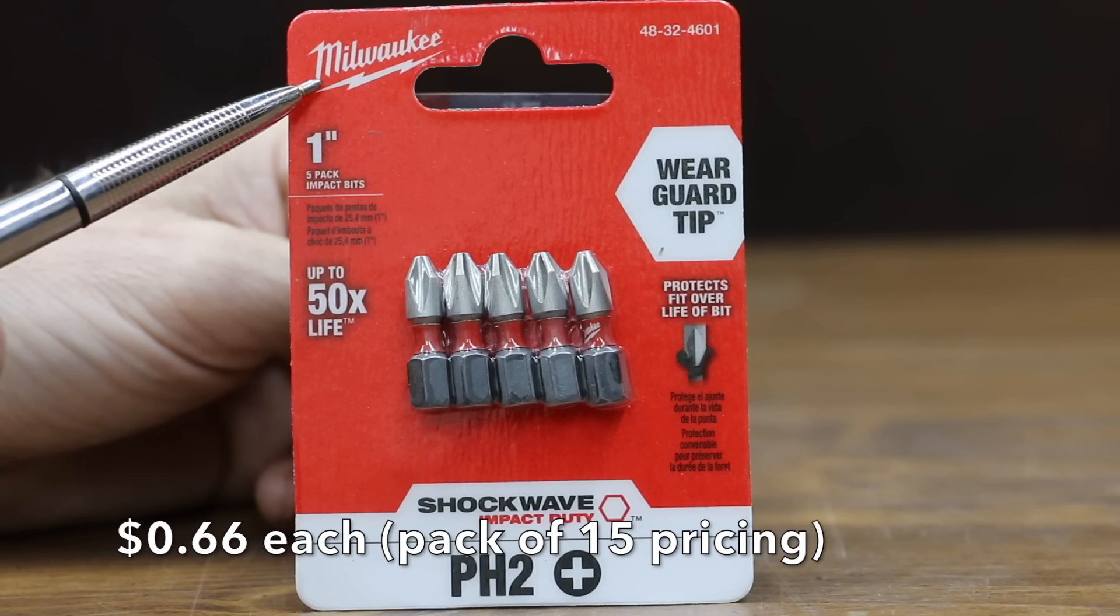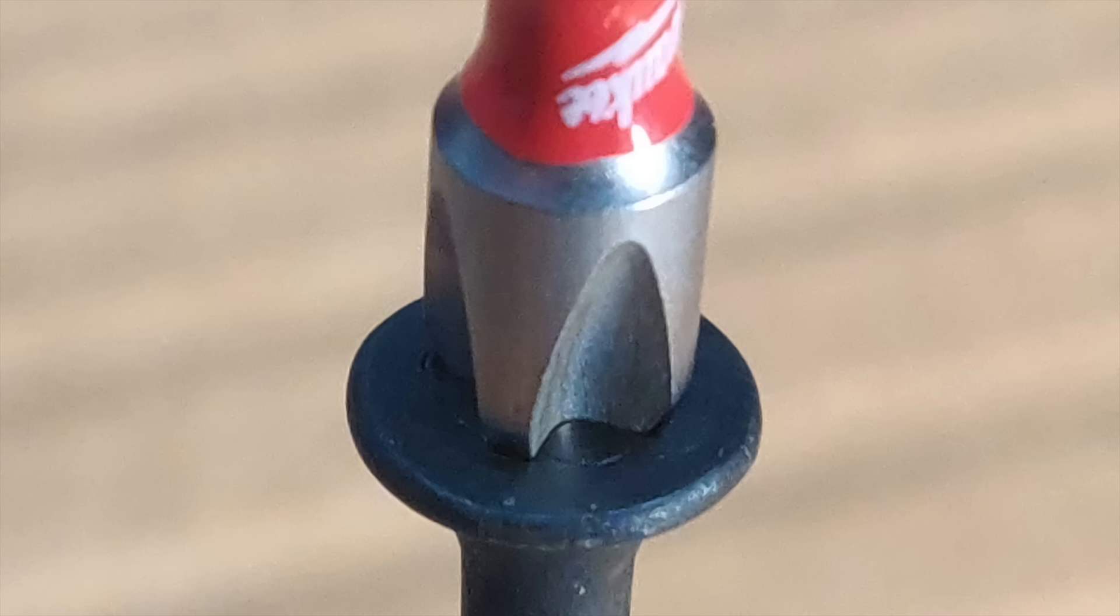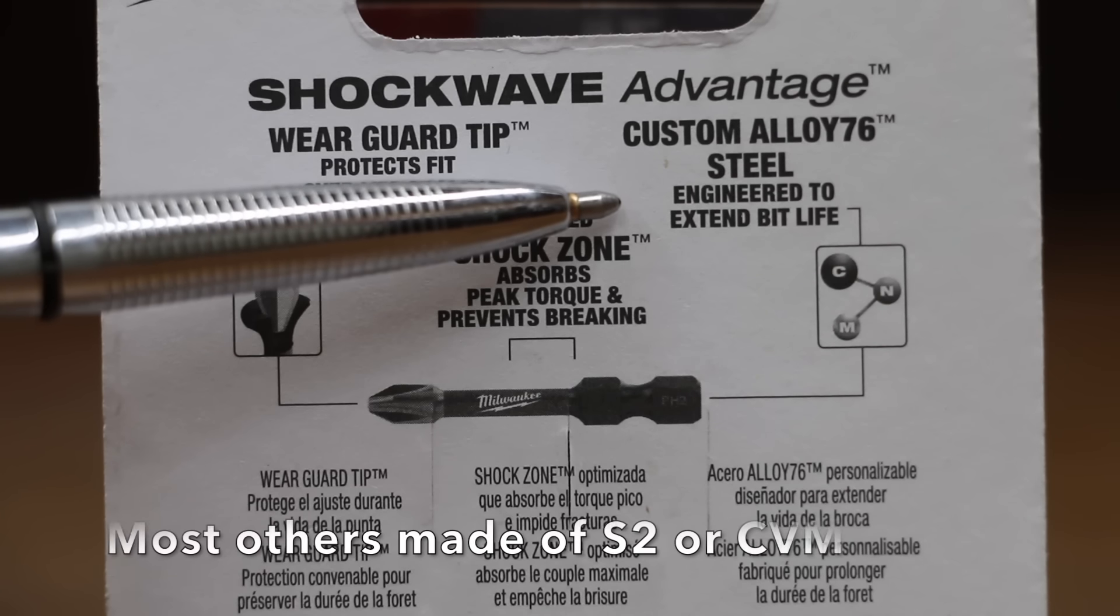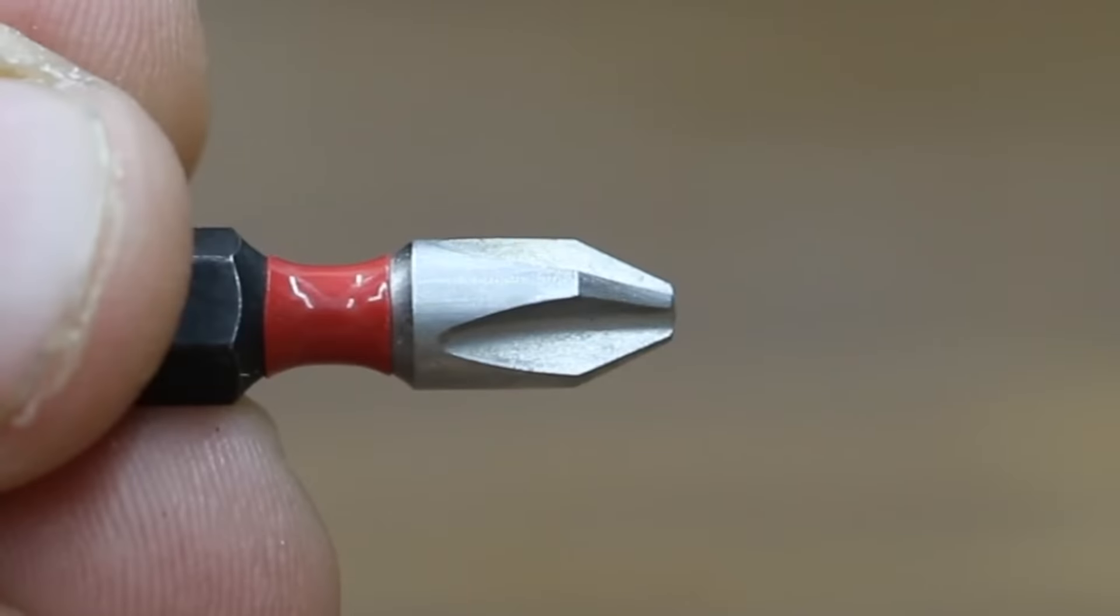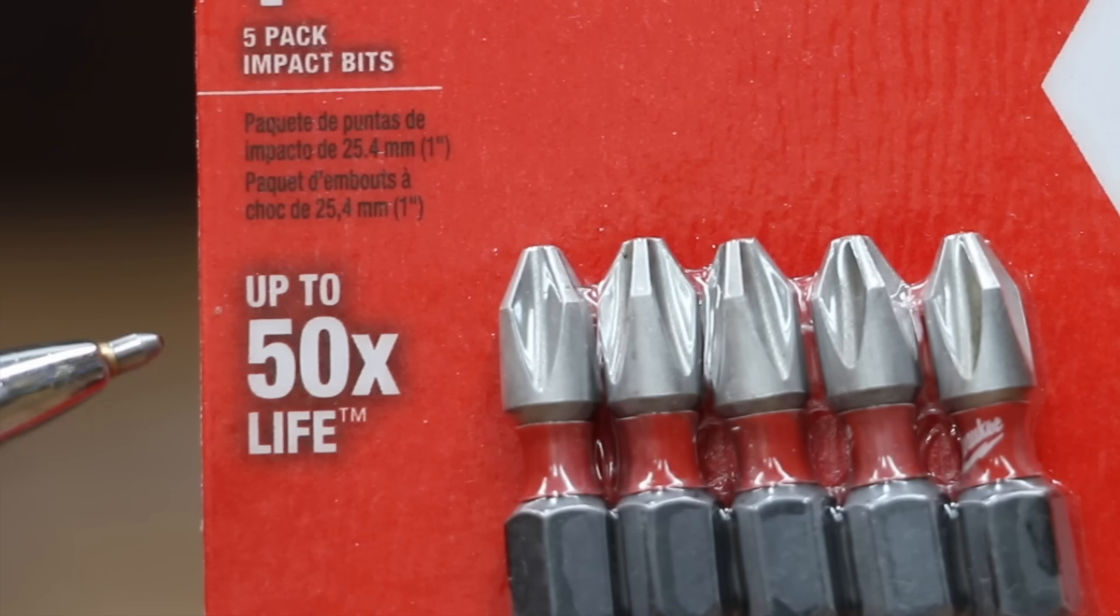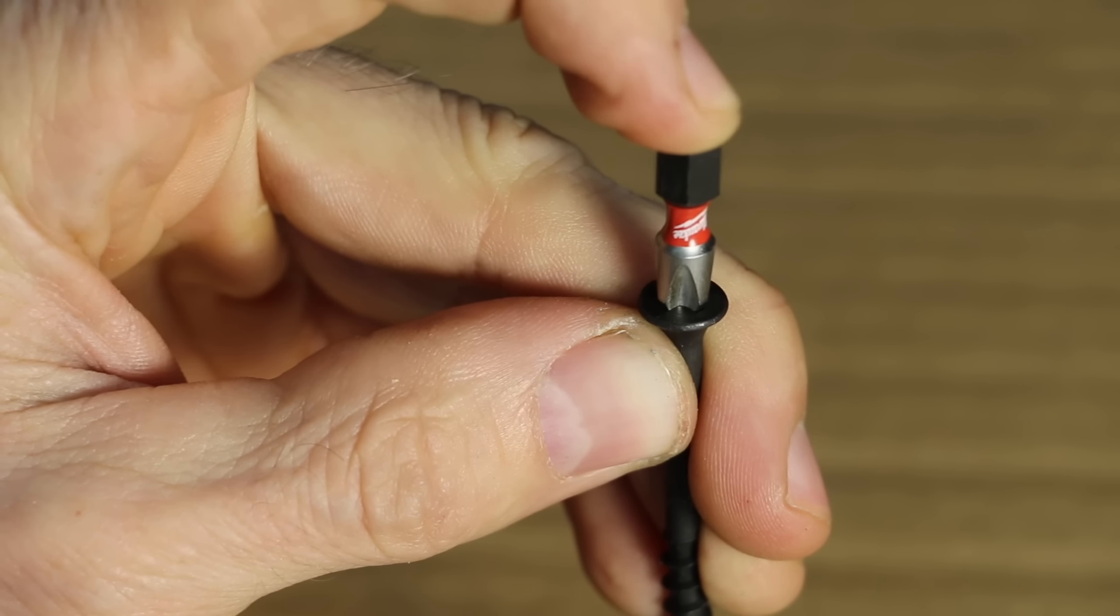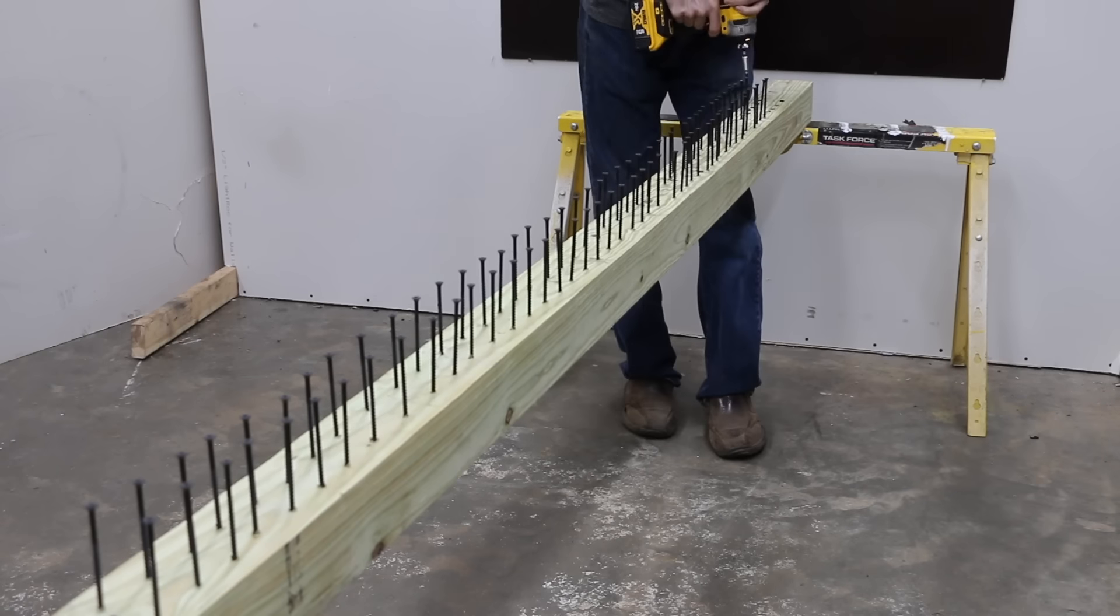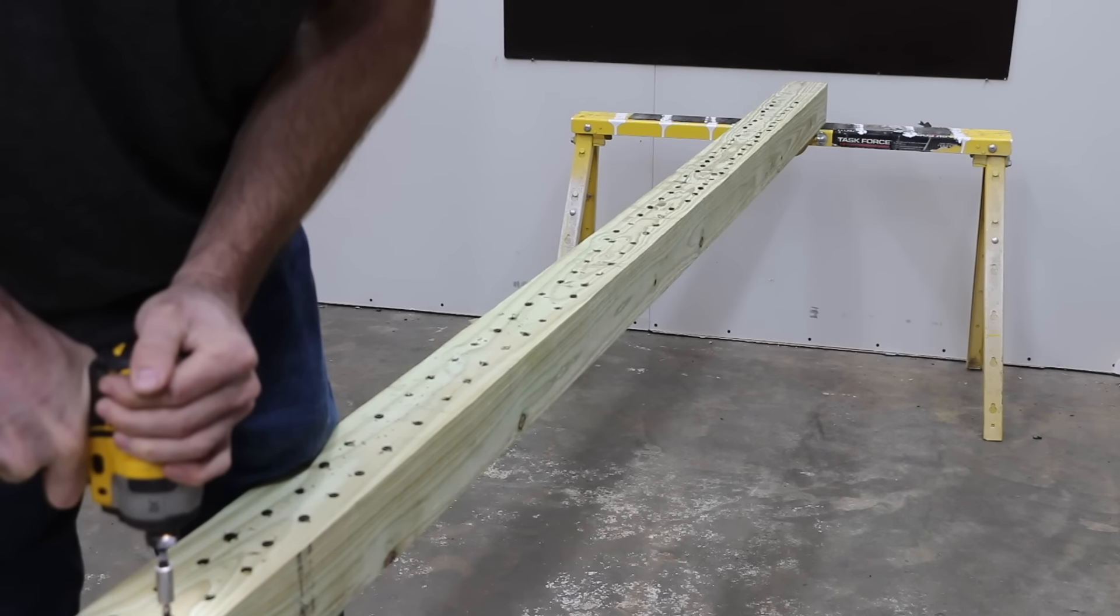Also costing 66 cents each, the same as the Makita brand, is this Milwaukee Shockwave impact bit. Wear guard tip protects the fit over the life of the bit. It's made of a custom alloy 76 steel, which is engineered to extend the bit life. Milwaukee has by far the most ambitious claims, saying that their product lasts up to 50 times longer than other impact bits. Very nice fit by Milwaukee, very little wobble. Professionally made in China. I have to admit, I was quite impressed with the Milwaukee. It seemed just as good as new throughout the entire test.